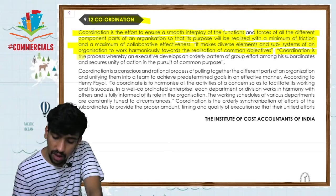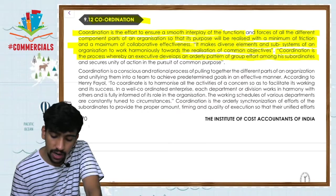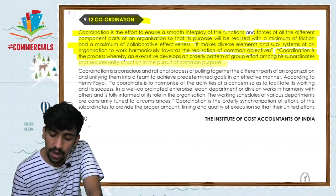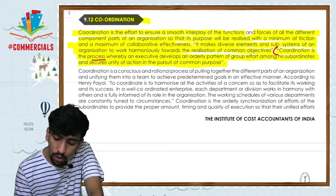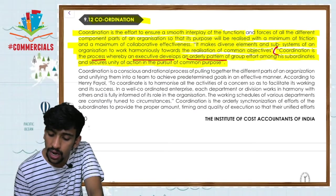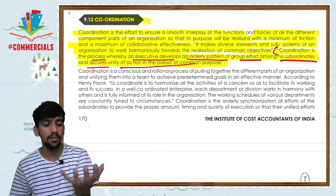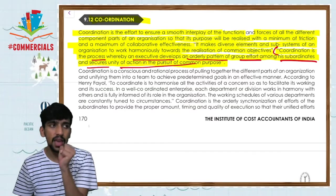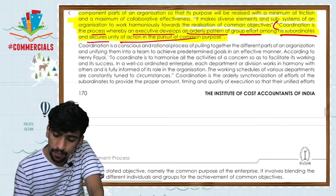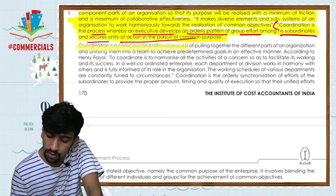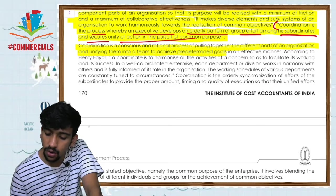Coordination is the process whereby an executive develops an orderly pattern of group efforts among subordinates and secures unity of action in the pursuit of a common purpose. Basically, coordination means one goal — to gather the different parts of an organization and unify them into a team to achieve pre-determined goals in an effective manner.